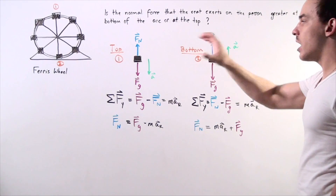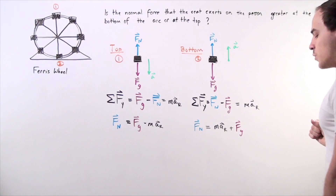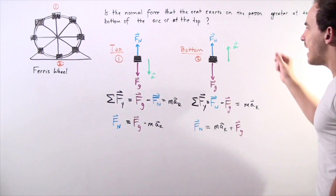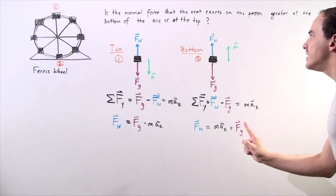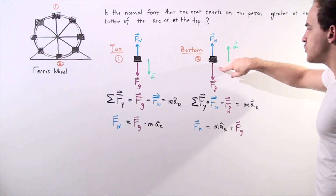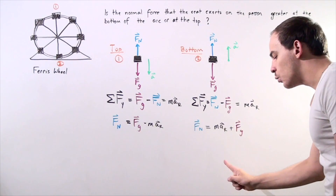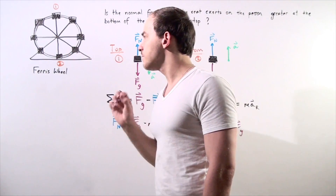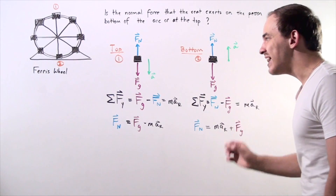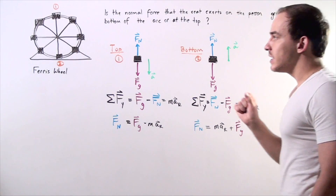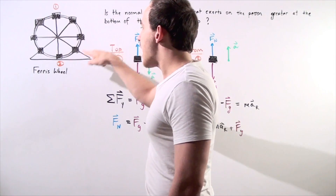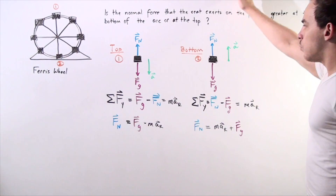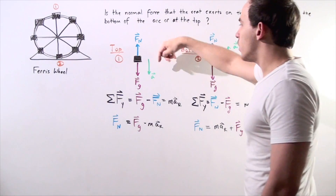What about at the bottom of the ferris wheel? At the bottom, we have the normal force that points upward and the gravitational force that points downward. But now, because we're at the bottom, our person is accelerating upward — at the bottom of our arc, the centripetal acceleration points upward.